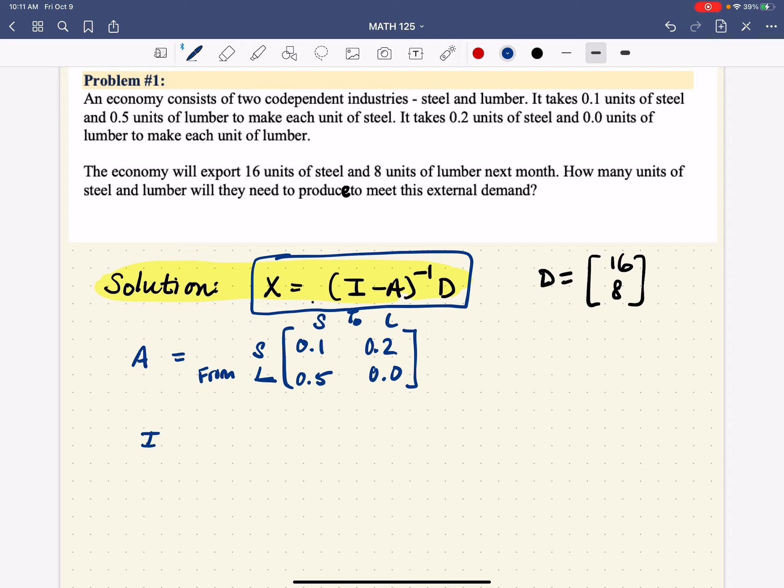I remember is the identity matrix that has the prescribed dimension. In this case, it's 2 by 2. And we're going to take away our A. And that's going to give us, let's see, 1 minus 0.1 is 0.9, 0 minus 0.2 is negative 0.2, 0 minus 0.5 is negative 0.5, and 1 minus 0 is 1.